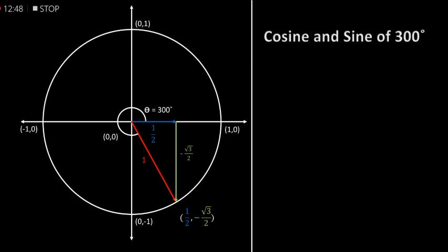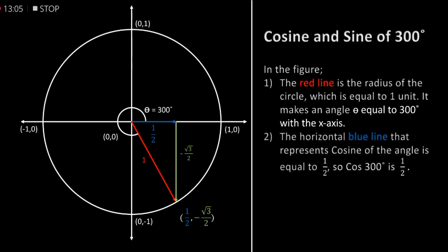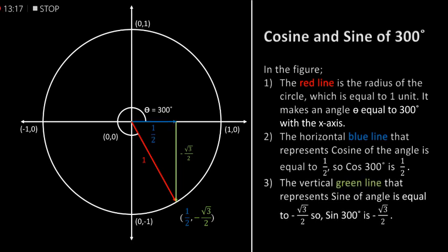Cosine and sine of 300 degrees. In the figure, the red line is the radius of the circle which is equal to 1 unit. It makes an angle theta equal to 300 degrees with the x-axis. The horizontal blue line that represents cosine of the angle is equal to 1 by 2, so cos of 300 degrees is equal to 1 by 2. The vertical green line that represents sine of the angle is equal to minus square root of 3 by 2, so sin of 300 degrees is equal to minus square root of 3 by 2.